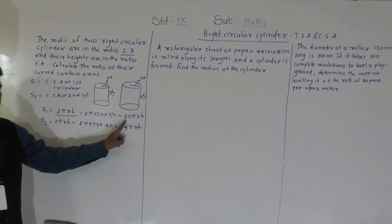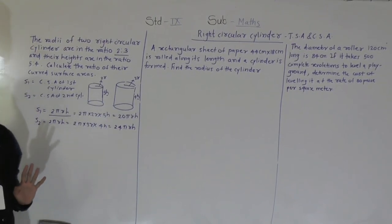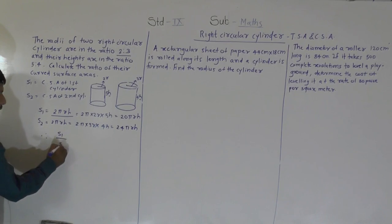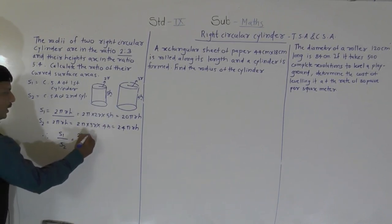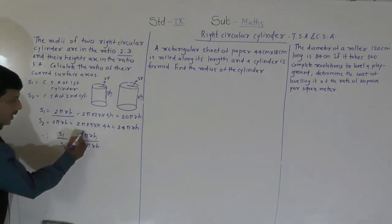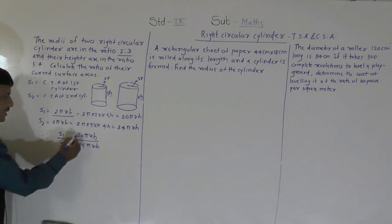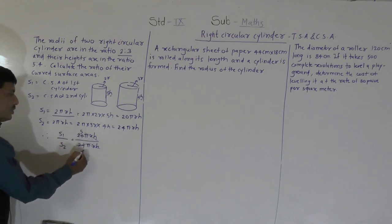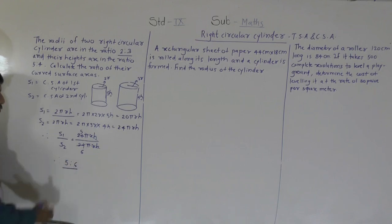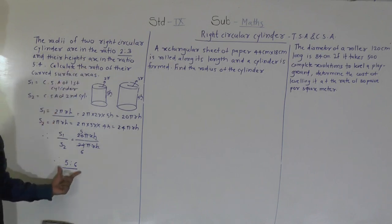Now we find the ratio S1 to S2. S1/S2 = 20πrh divided by 24πrh. The πrh cancels. We divide 20 and 24 by their HCF, which is 4: 20÷4 = 5 and 24÷4 = 6. So the required ratio of their curved surface areas is 5:6.